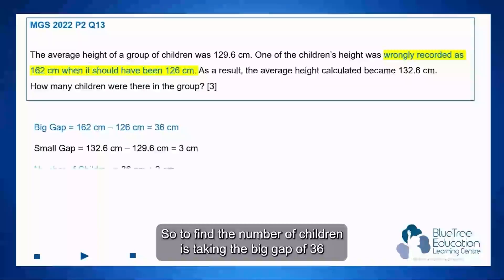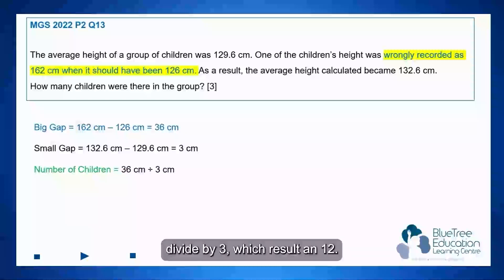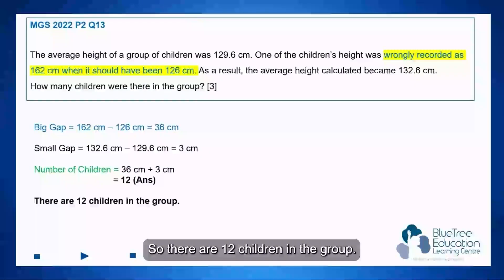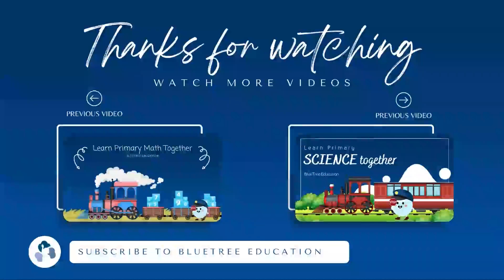To find the number of children, we take the big gap of 36 divided by 3, which results in 12. So there are 12 children in the group. Thank you.